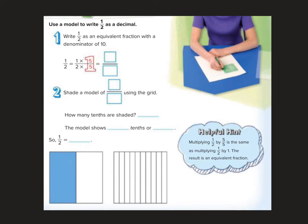Use a model to write 1 half as a decimal. Write 1 half as an equivalent fraction with a denominator of 10. So 1 half, if I get it to 10, then I can think of it as tenths. We know there's a tenths place. That's why we want to try for 10 tenths or hundredths or thousandths because then we can just switch it straight to a decimal. Let me show you that here. So 2 times 5 is 10. 5 times 1 is 5.